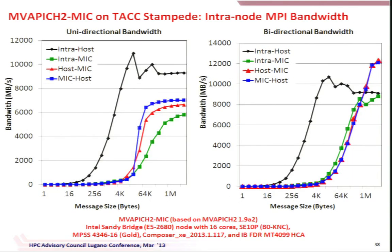For internode bandwidth, intra-host over InfiniBand achieves the full FDR bandwidth. Host-to-MIC through SCIF also achieves good performance. However, MIC-to-MIC across nodes over InfiniBand shows very poor bandwidth — limited to around 370 MB/s or 960 MB/s — whereas it should be around 5280 MB/s. This is the SandyBridge chipset limitation: IB reads from the MIC are severely limited. We are working on a host proxy-based design where data from the MIC is first brought to the host, which then handles the InfiniBand communication.